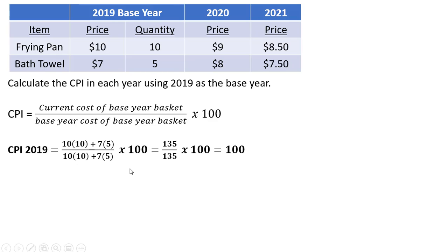In 2019, the current cost of the base year basket is going to be 10 times 10 plus 7 times 5. And since 2019 is the base year, the base year cost will equal the current year cost of the base year basket. So 10 times 10 plus 7 times 5 appears in the denominator. We're going to get 135 over 135, which is just 1 times 100. And the CPI is normalized to 100 in the base year.